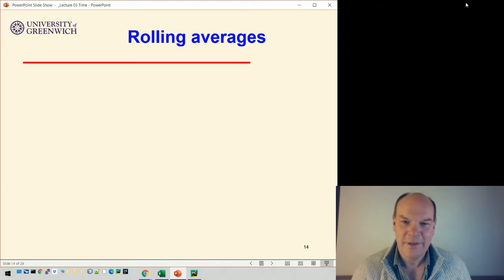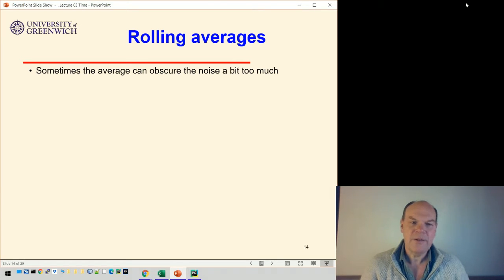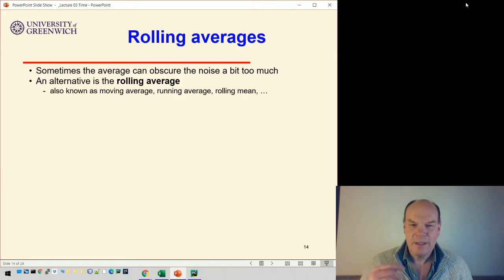Okay, so we've seen how to draw averaged lines. Let's look at rolling averages. Sometimes the average can obscure the noise a bit too much, so if there's a lot of noise and you draw an average, it tends to smooth out rather a lot. An alternative which is very common is known as a rolling average.